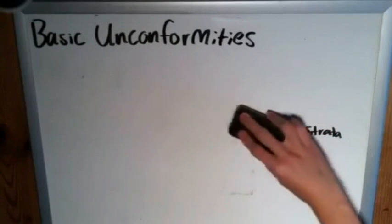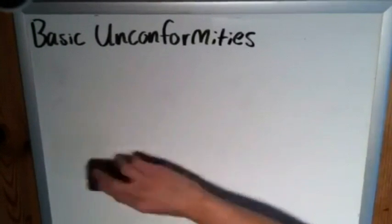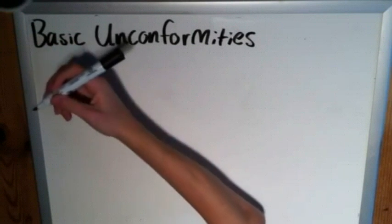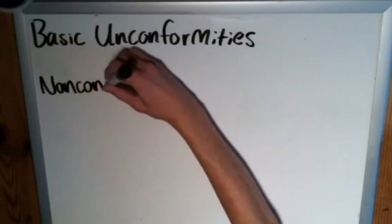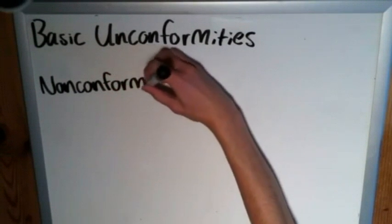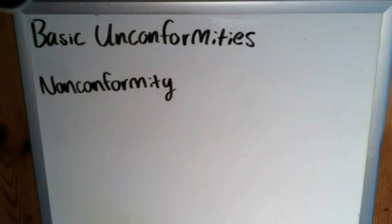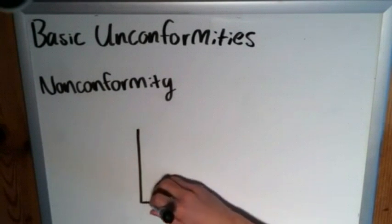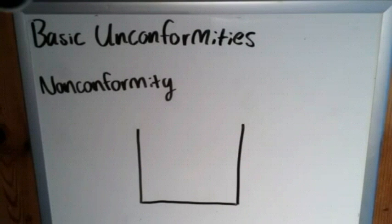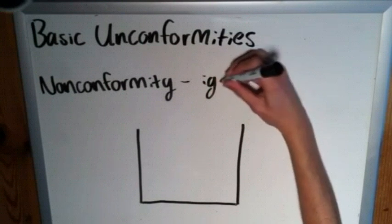There's one final type to cover. Its name is pretty similar to disconformity — I mix these two up a lot, they're incredibly similar. Before we had a disconformity, which is with sedimentary rock. This final one is called a nonconformity. Disconformity, nonconformity — I think they should have given these more clear names, but a nonconformity is unique because it has to do with igneous rock. Remember that.